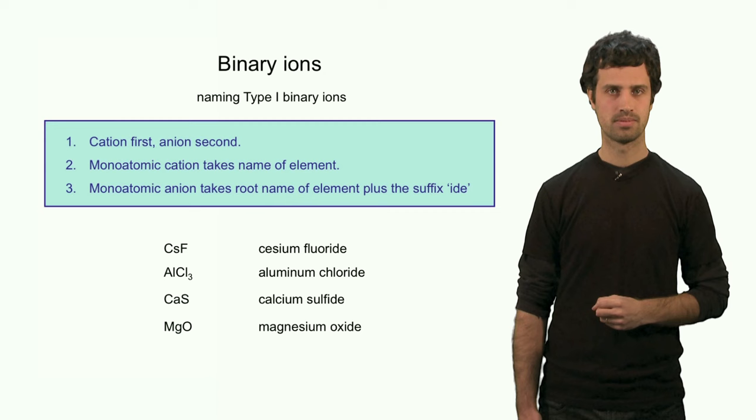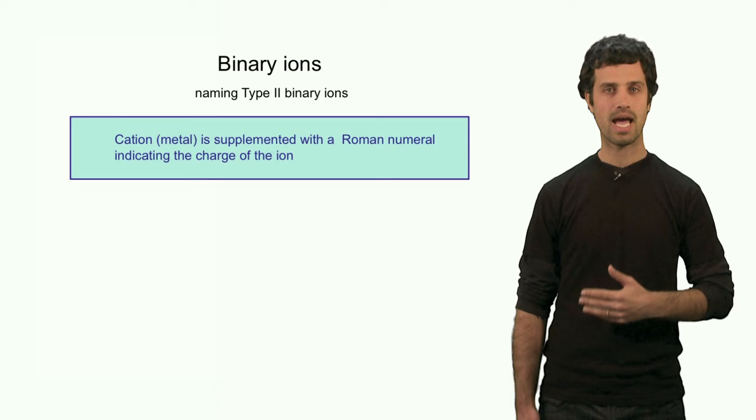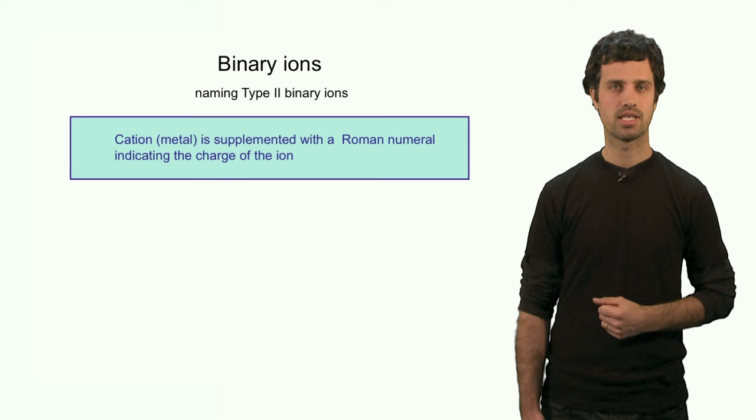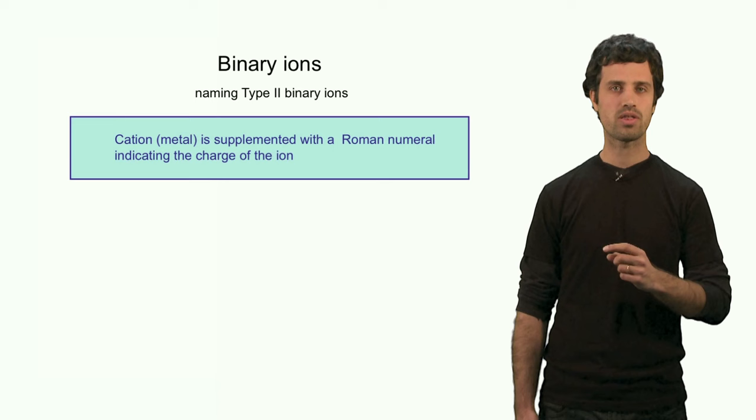Now, let us next look at ionic compounds that contain a Type 2 cation. The naming of these compounds is almost the same as those of the ionic compounds that contain a Type 1 cation. There is one important exception, and that is that we have to specify with a Roman numeral the charge of the cation.